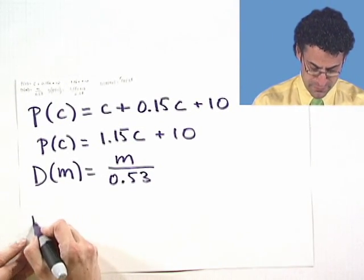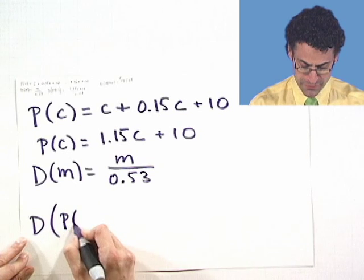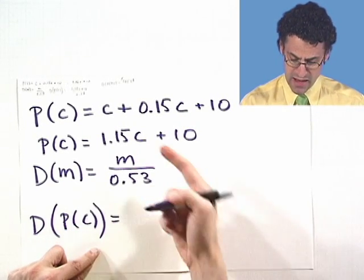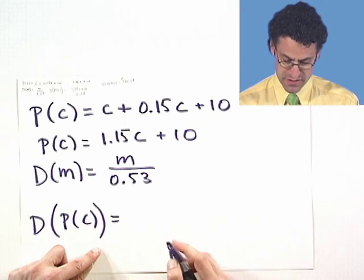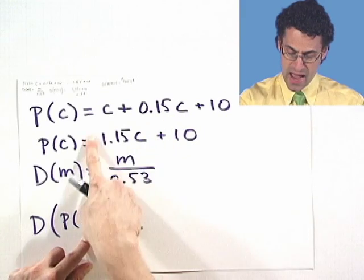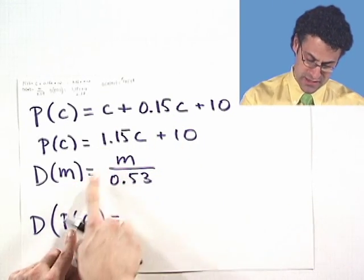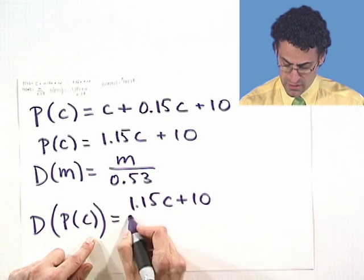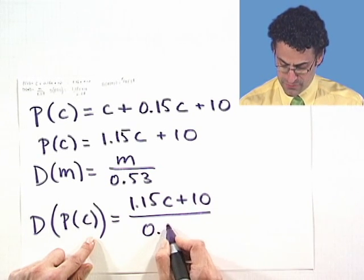We see that the dollar amount for the perfume if it costs C pounds will be, and we now take the composition of these two functions. So what do I do? I take this function as the output and use that as the input into D. And so I see 1.15 C plus 10 all over 0.53.